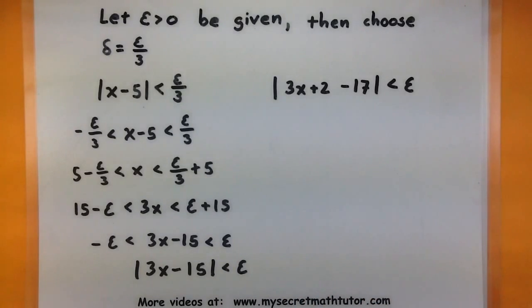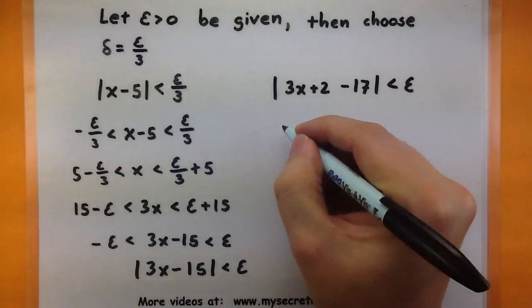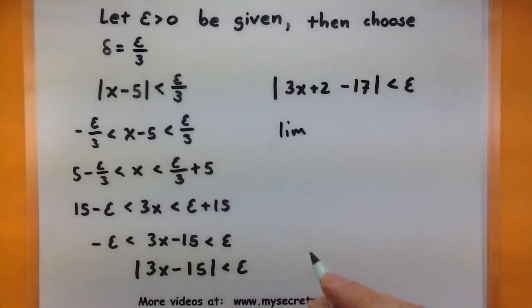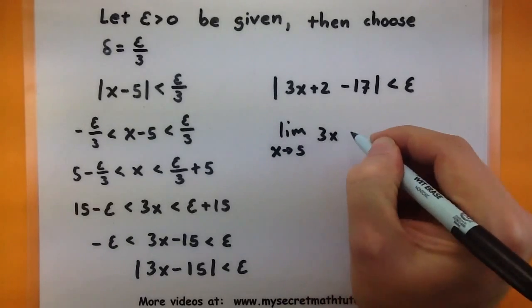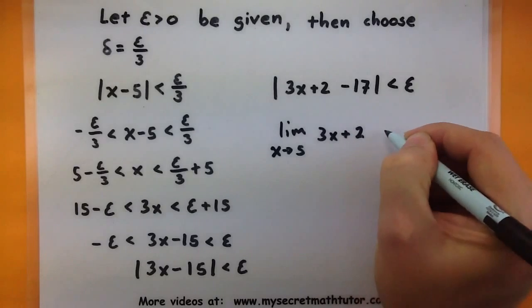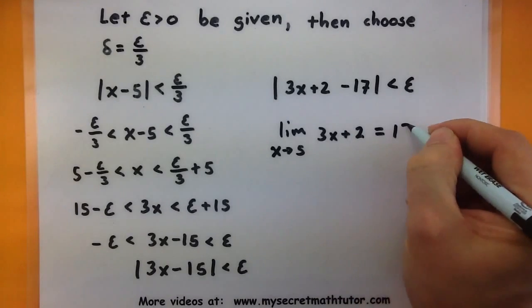That's what all the rest of this work shows, is that it's forcing my function to be within epsilon of 17. So since the definition of a limit is satisfied, I can say that the limit as x approaches 5 of my function really does equal a 17.